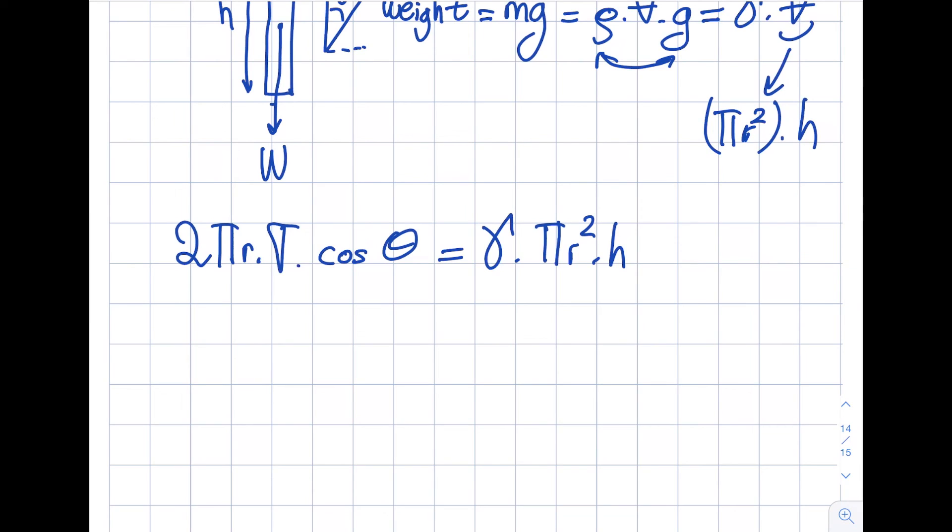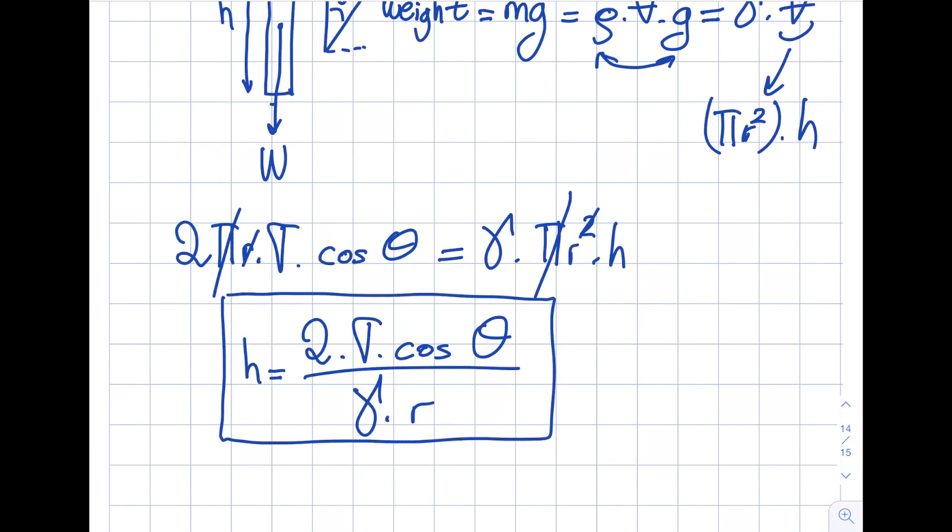So the goal is to get h over here. So the pi's is out. This r squared is out. So from here I may get something fairly manageable. So I get myself 2 times the sigma times the cosine of theta divided by the specific weight times the r. So this will be the equation that I obtain for this particular geometry.